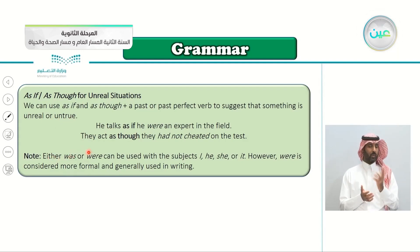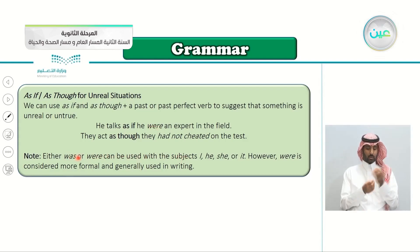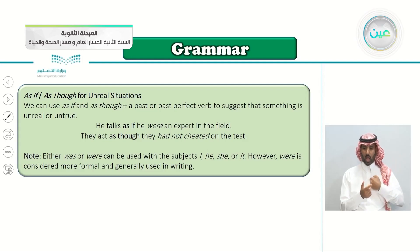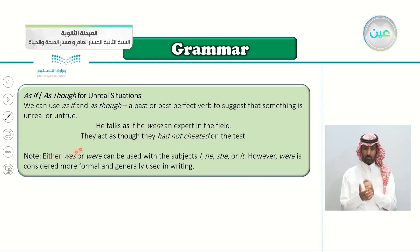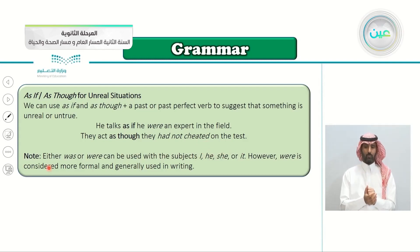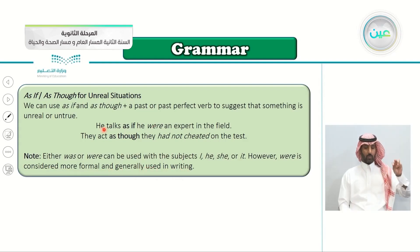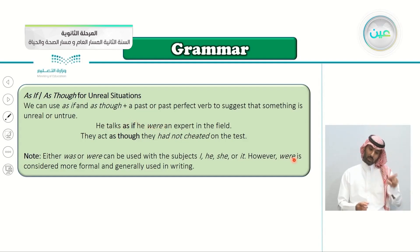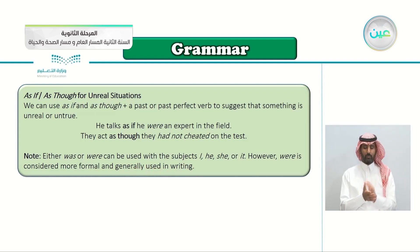A note: either 'was' or 'were' can be used with subjects I, he, she, or it. However, 'were' is considered more formal and generally used in writing. For example: 'He talks as if he were an expert' — both 'was' and 'were' are correct, but 'were' is more formal.